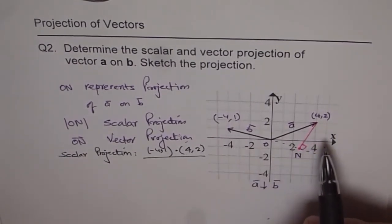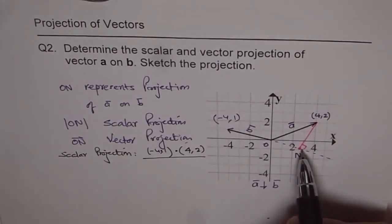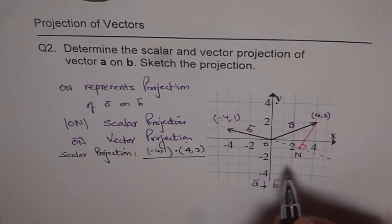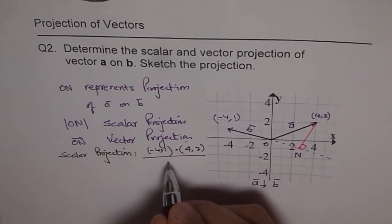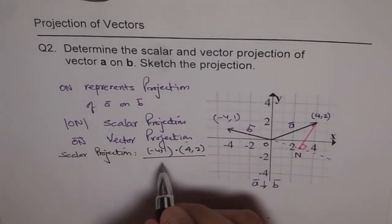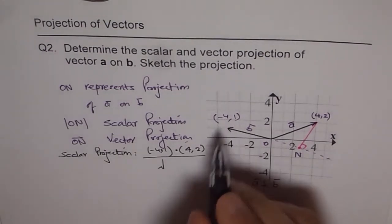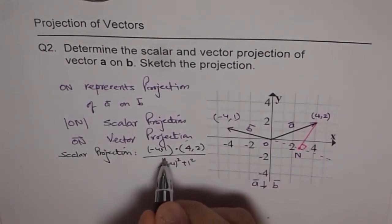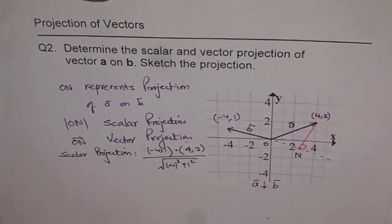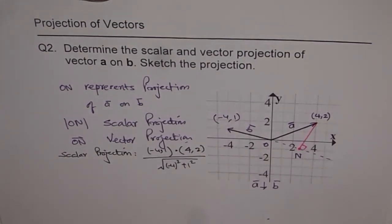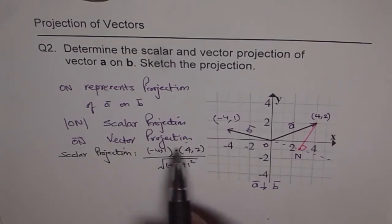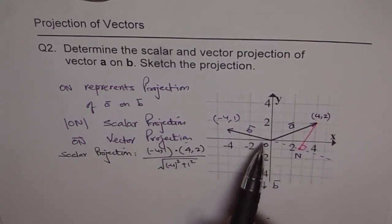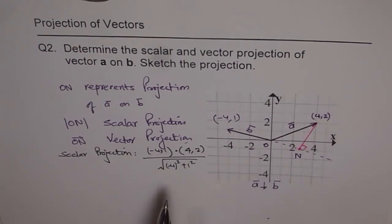Divided by, if the projection is from A to B, then it's divided by the B magnitude. Magnitude of B, which is square root of, B is this vector, which is minus 4 square plus 1 square. So once you calculate this, you get scalar projection.